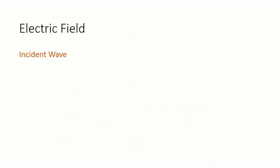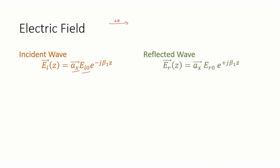First is the electric field incident wave. The expression for the incident wave is EI(z) = x-hat times the magnitude, and since the incident wave is in the positive z direction, I have written it with e^(−jβ₁z). The reflected wave expression is ER(z) = x-hat times ER0, and after striking the perfect conductor it reflects back in the negative z direction, hence the sign changes to e^(+jβ₁z).